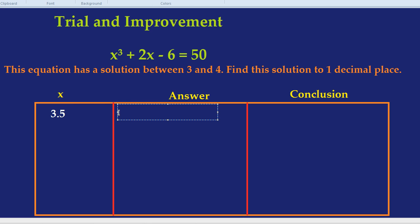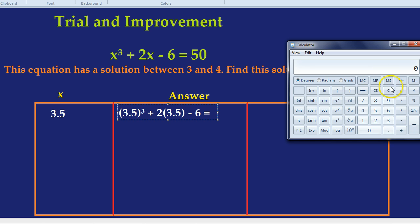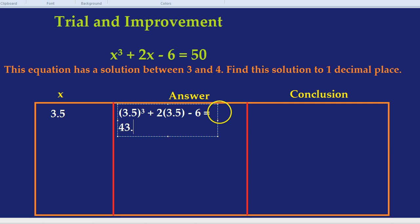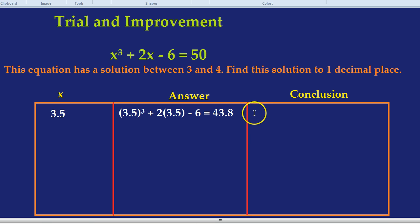3.5. Now, our answer is what we do when we put 3.5 inside that equation. To put it inside the equation, wherever you see an x, replace it with a 3.5. So in this case, 3.5 cubed plus 2 times 3.5, take away 6. Notice all I've done is I've replaced the x up here with a 3.5. Now we need a calculator. 3.5 cubed is that, plus 2 times 3.5 is this, and take away 6. It's 43.8. Now, what's our conclusion? We were aiming for 50, so this is too small. We can write that as our conclusion.